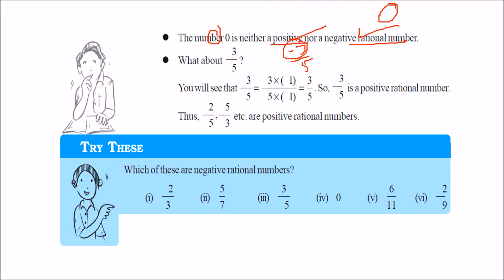How about minus 3 by 5? Minus 3 is the numerator, 5 is the denominator. Since minus 3 is negative, this is a negative rational number. How about 3 by 5? Both are positive, so this is a positive rational number.